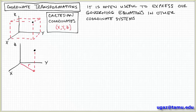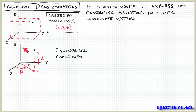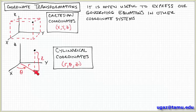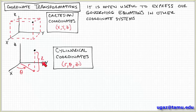Another useful coordinate system is cylindrical coordinates. Again, with respect to x, y, and z axes, you can locate a point in space in terms of three variables. You draw a projection down to the x-y axes and define R as the distance from the origin to its projection on the x-y plane, and theta as the angle between the x-axis and this distance R. The height above this plane is expressed by the variable z. So cylindrical coordinates express the same point in space using R, theta, and z instead of x, y, and z.